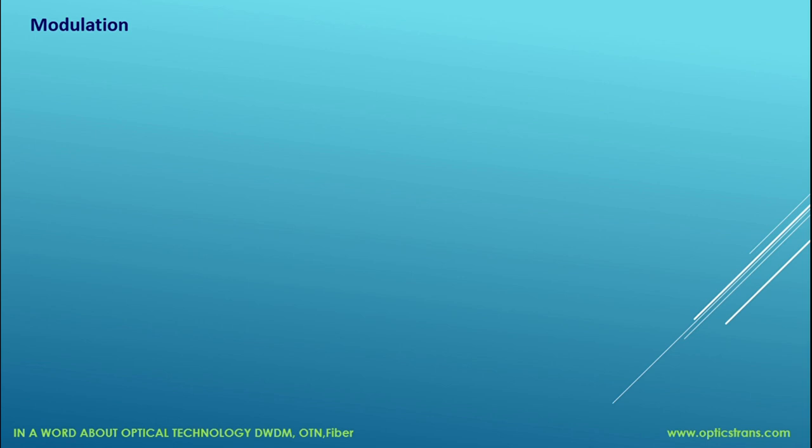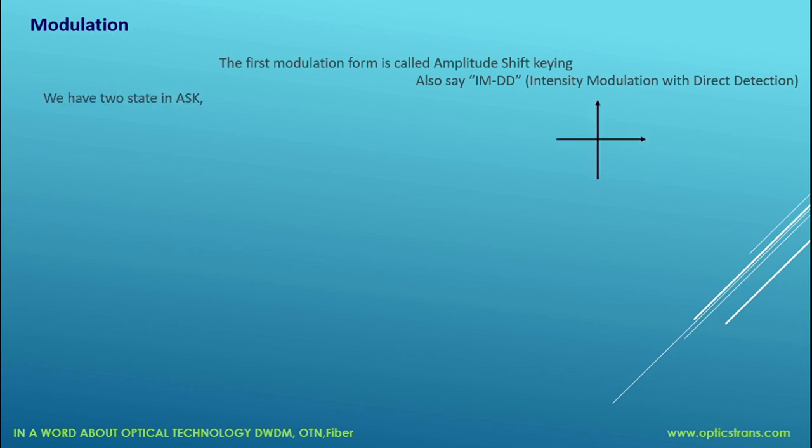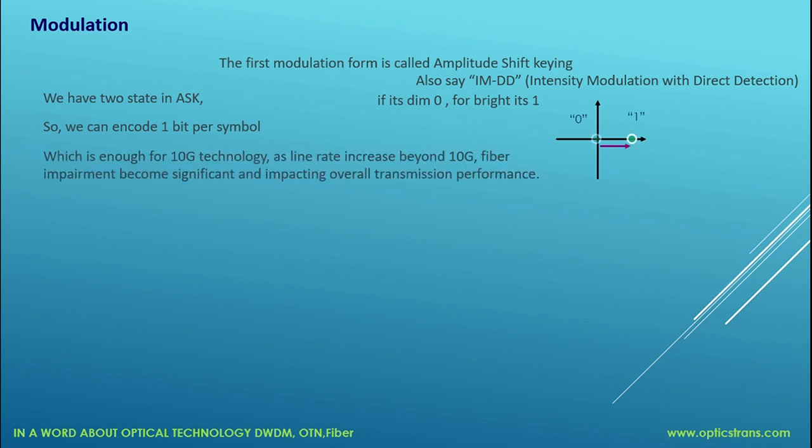For that we're using the first modulation called Amplitude Shift Keying, also called IMDD, Intensity Modulation with Direct Detection. In this we have two states: absence of signal is zero and presence of signal is one. In Amplitude Shift Keying we can encode one bit per symbol, which is enough for 10G technology.